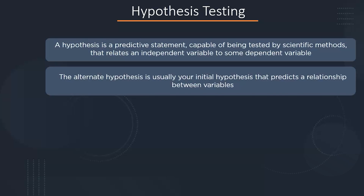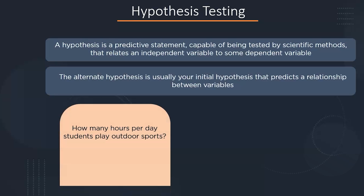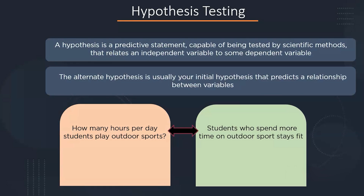The alternate hypothesis is usually your initial hypothesis that predicts the relationship between two variables. For example, suppose you answer the question of how many hours per day a student plays outdoor sports. With this data, you can make a hypothesis — students who spend more time on outdoor activities stay fit.